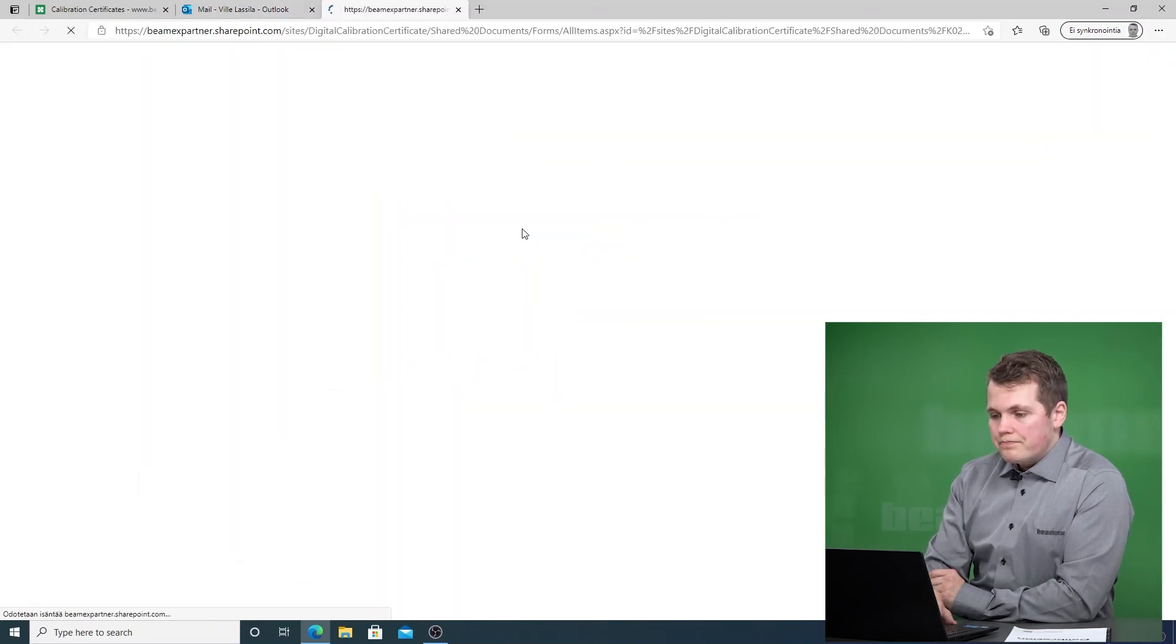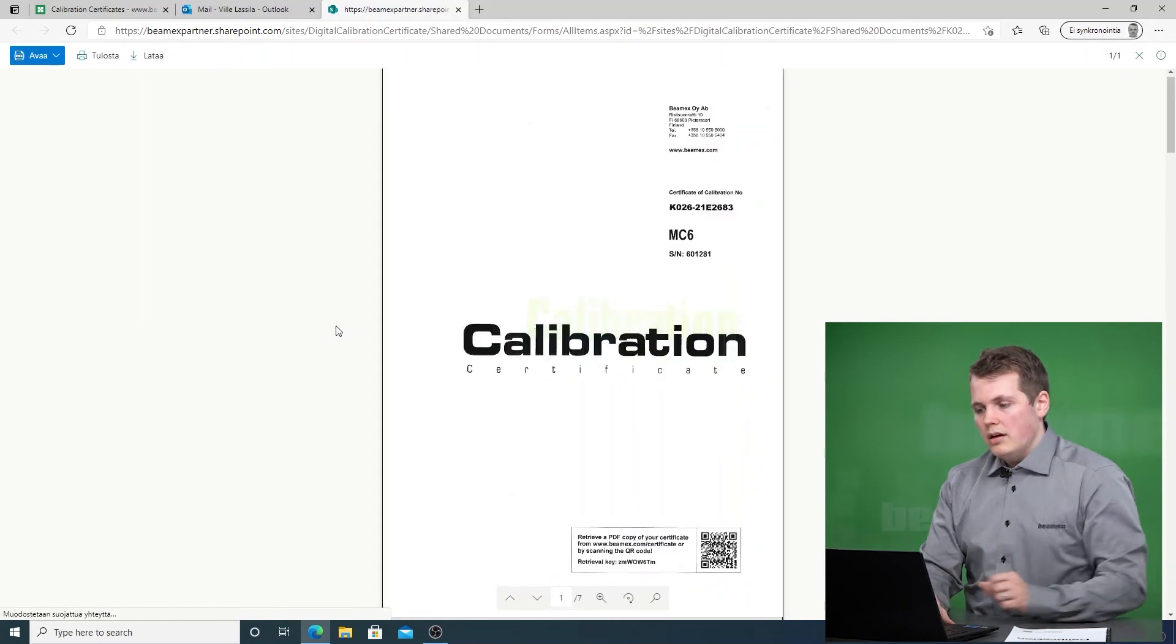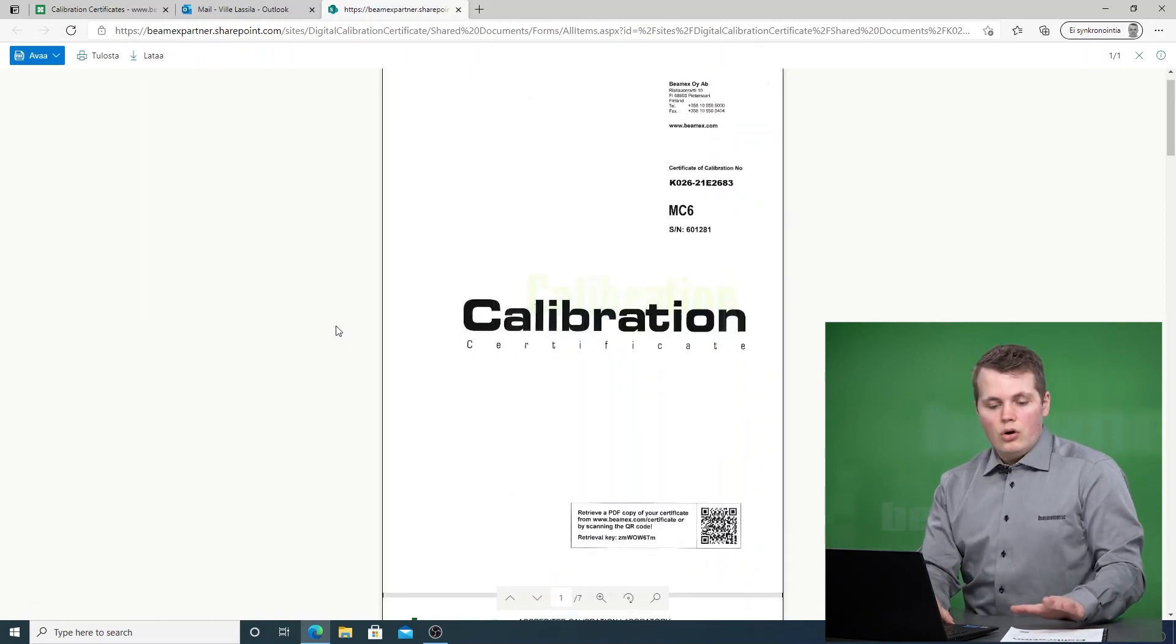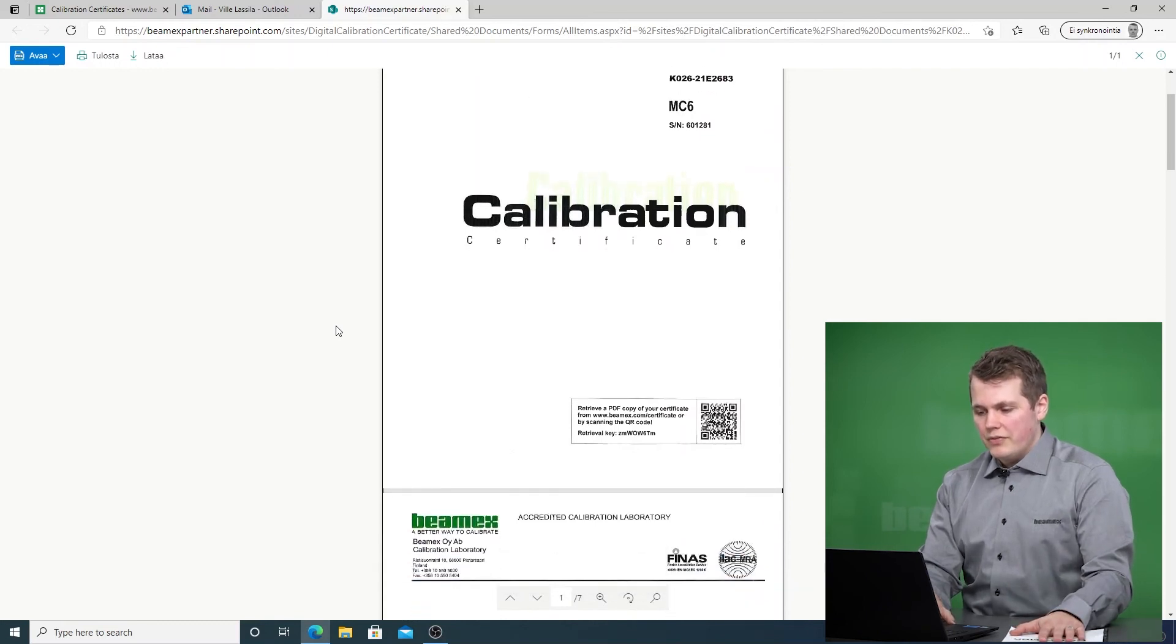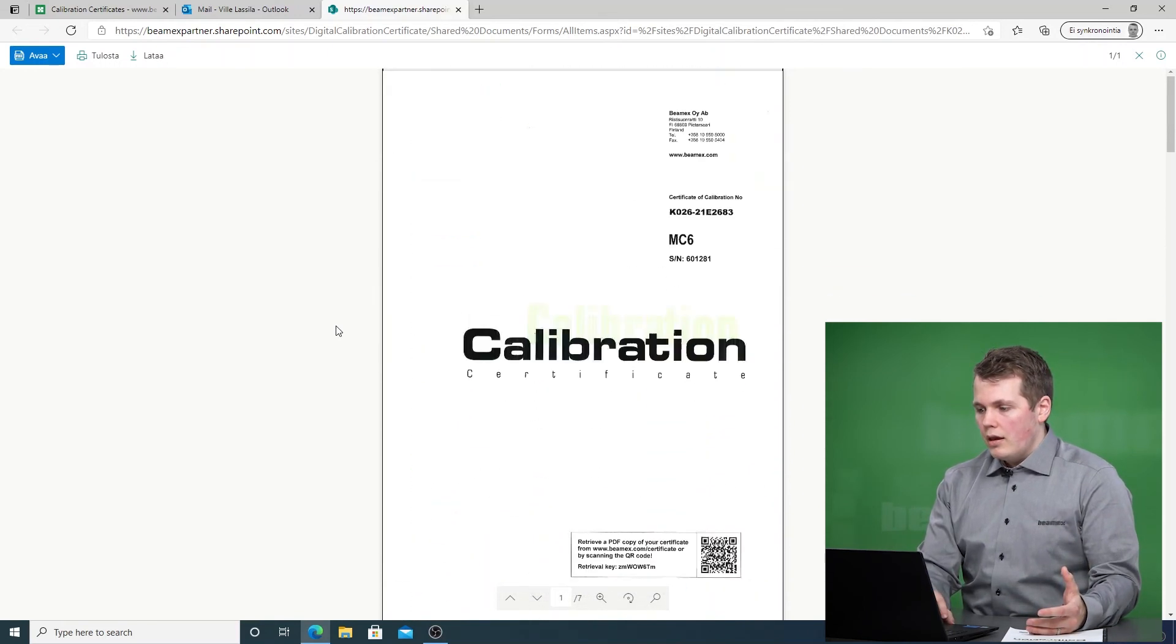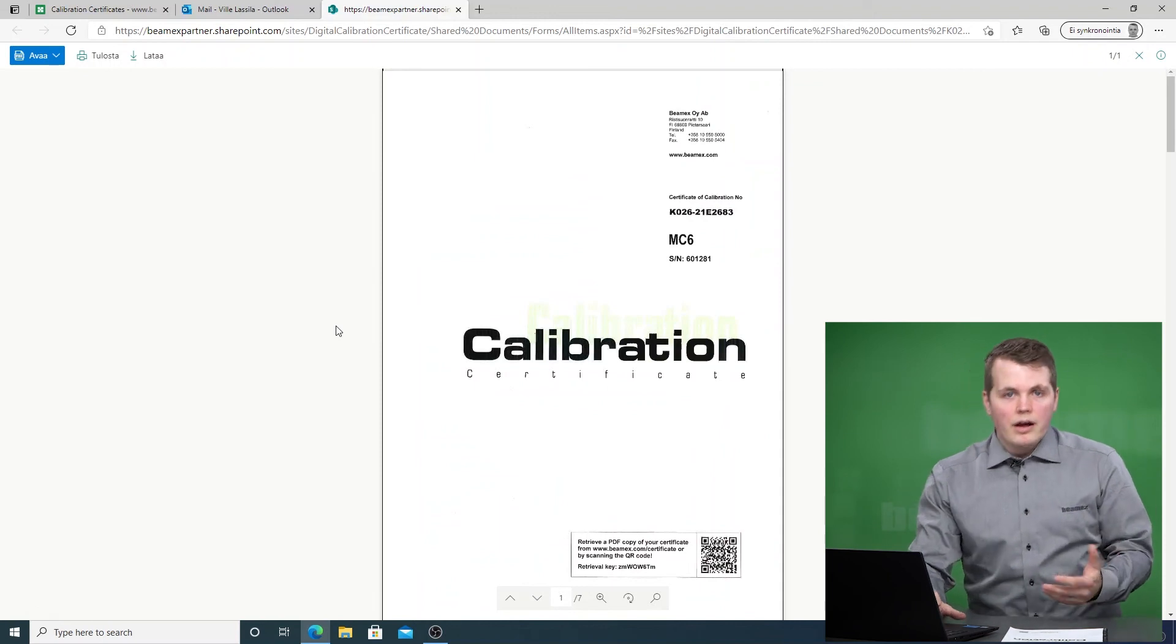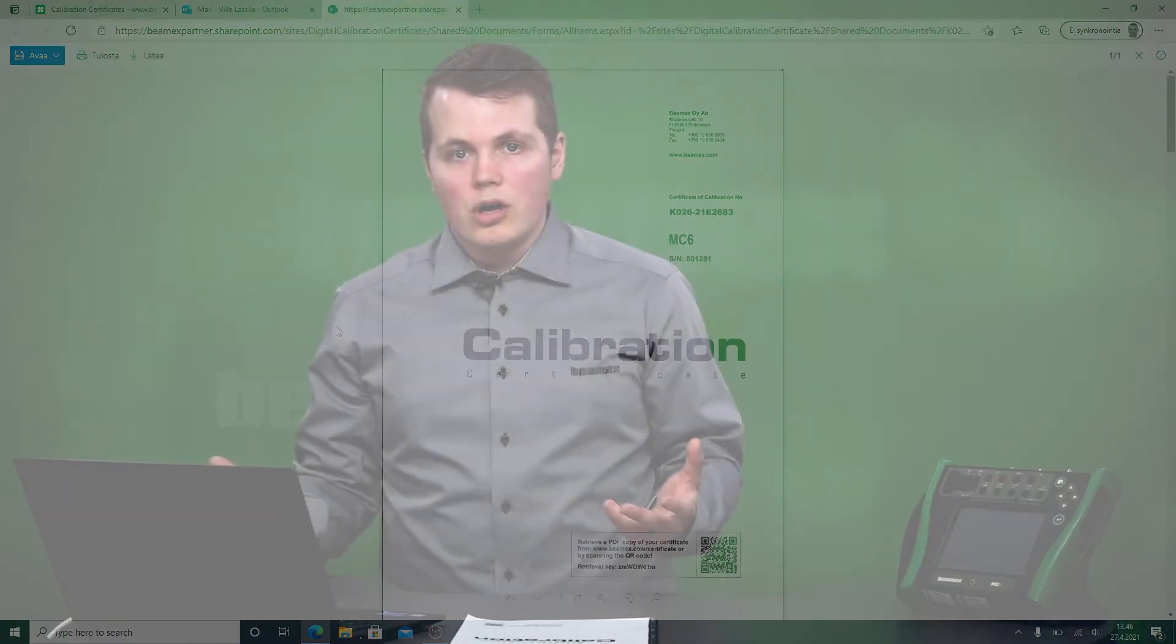So I will click on this and it will open up the exact version of my calibration certificate but in PDF format and this can then be downloaded and archived into some network drive so that you can actually search for it when an auditor asks.